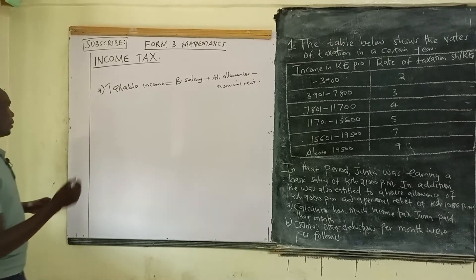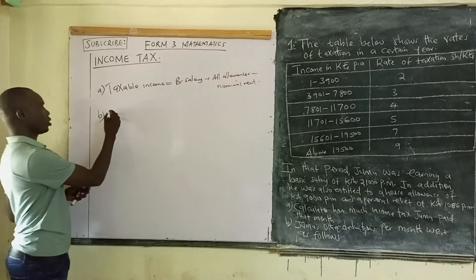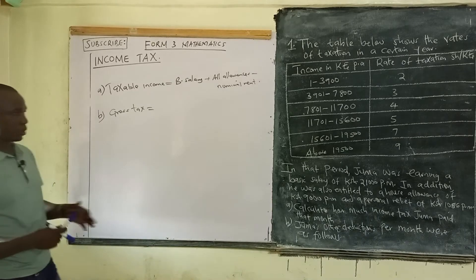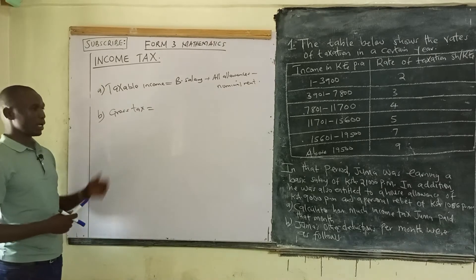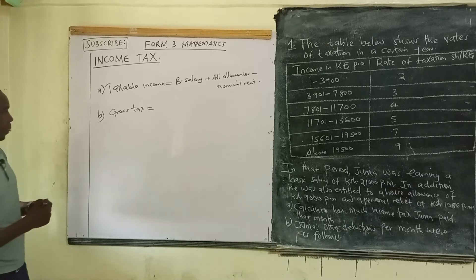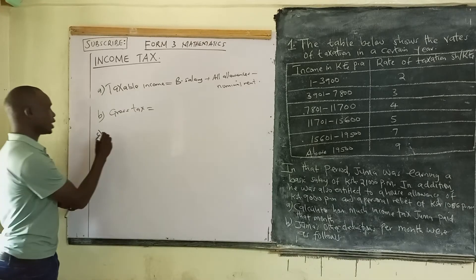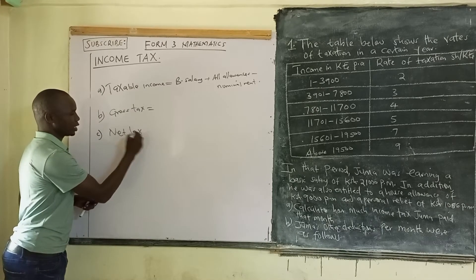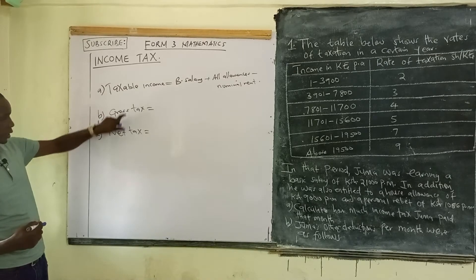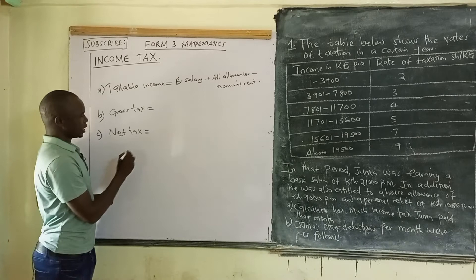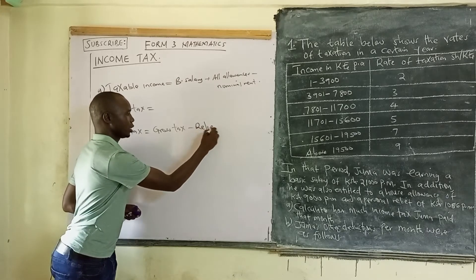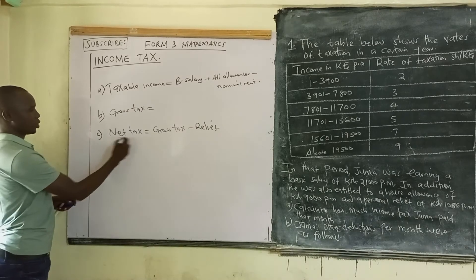Another term we are going to come across is gross tax. Gross tax is the tax calculated from the tax brackets. According to business, gross tax is the tax that an individual is supposed to pay. However, individuals do not end up paying gross tax — they end up paying what we call net tax. This is because the government offers what we call relief. To arrive at net tax, we take the gross tax from the tax brackets, then subtract the relief.